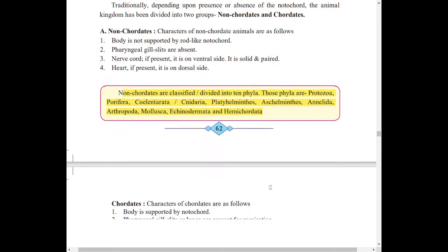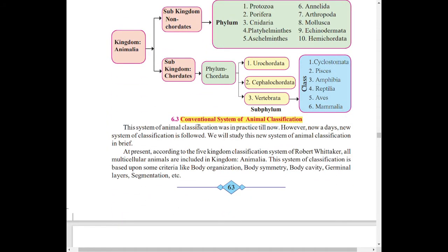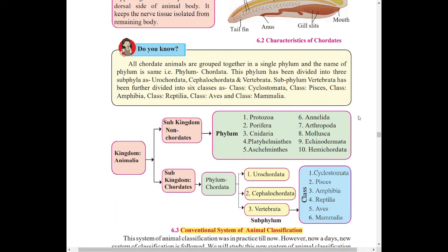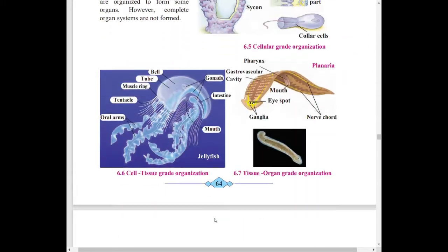Then conventional system of animal classification. So this flowchart or mind map you have to read. You have to learn this because two questions can come from this. To understand what types of questions will be formed, look at the description where the question bank is given. You can download it and try to solve it. Then you will automatically understand what types of questions will come.